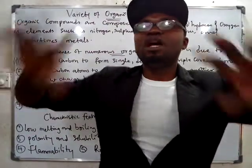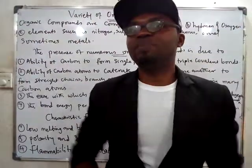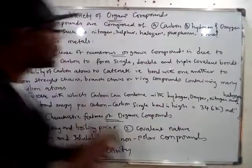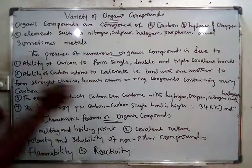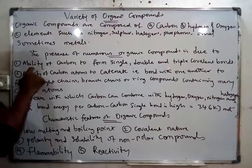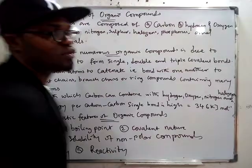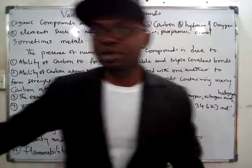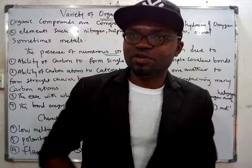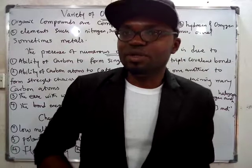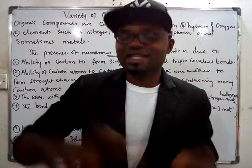So why is it that carbon is able to form so many organic compounds? What is the nature of carbon that enables this? Number one: carbon's ability to form single, double, and triple covalent bonds. Carbon can easily form single, double, and triple covalent bonds.